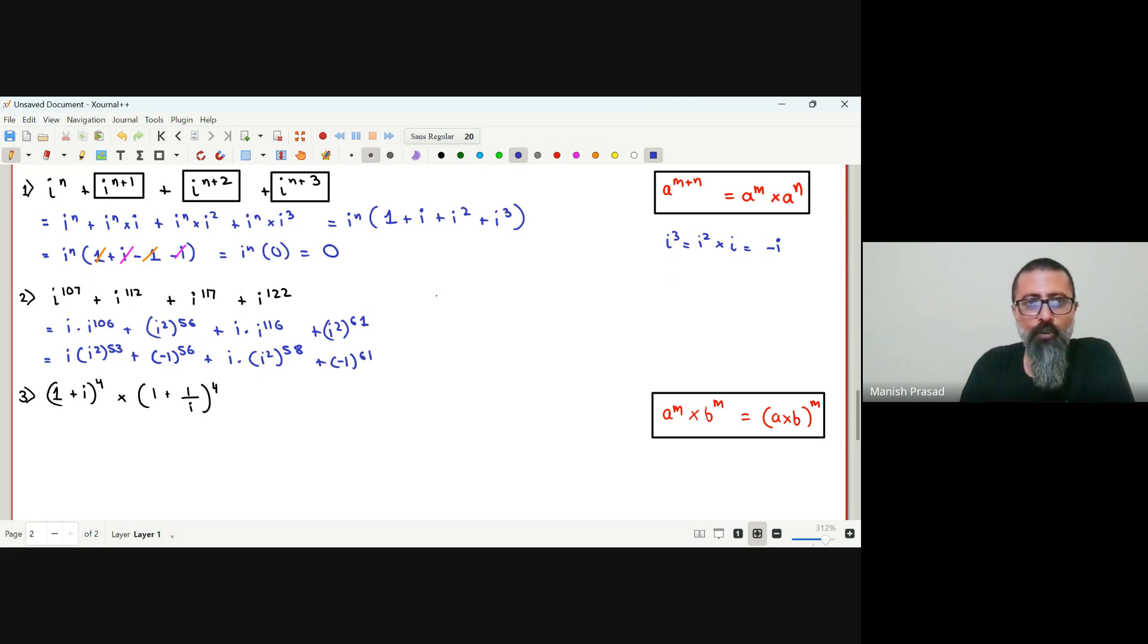So ab ye ho jaega, i, i square is negative 1 to the power of 53. Negative 1 to the power of 56 will be positive 1. Then third part will become negative 1 to the power of 58, and then fourth part is negative 1 to the power of 61. Odd number hai, so negative 1.